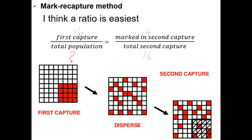It happens that both captures are 16 this time, though they won't always be equal. The math: 16 × 16 = 4 × N. Divide both sides by 4, and you get N = 64 — that's the estimated total population size.